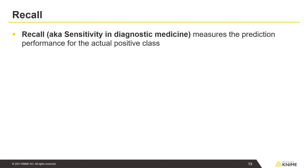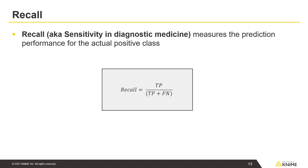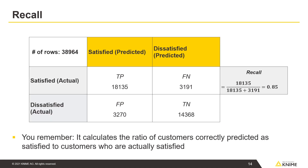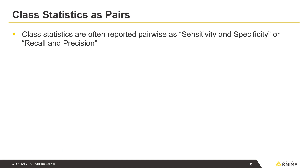Recall, also known as Sensitivity in diagnostic medicine, measures the prediction performance for the actual positive class. Recall is calculated with the same formula as Sensitivity — it calculates the ratio of customers correctly predicted as satisfied to customers who are actually satisfied. Notice that class statistics are often reported pairwise as Sensitivity and Specificity, or Recall and Precision.